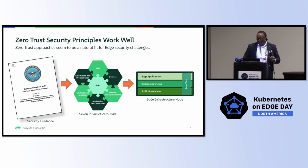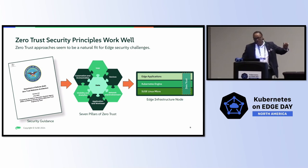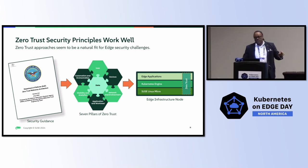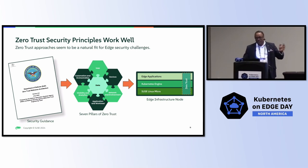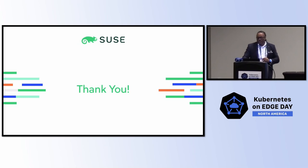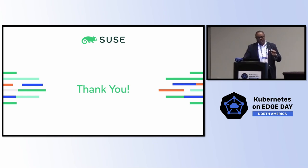Working with the National Security Agency and DISA, these organizations created the Zero Trust Reference Architecture. It outlines seven pillars toward Zero Trust, and you can apply policy as code to implement that into your security. This could go on for 45 minutes in detail, but this is the speed version of compliance as code and accelerated readiness — it's the only way we can automate and provide security at scale based on these edge deployments.